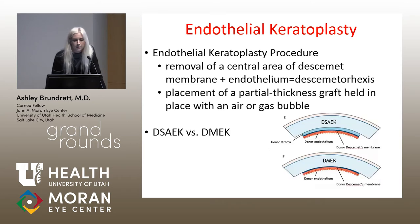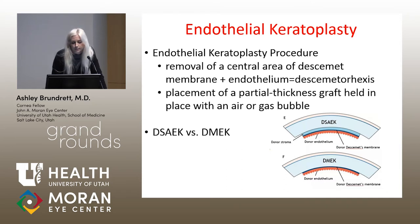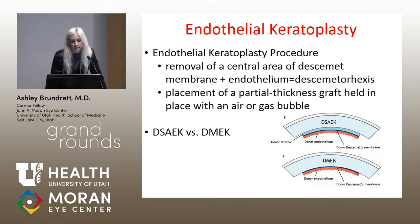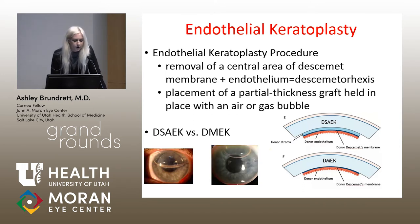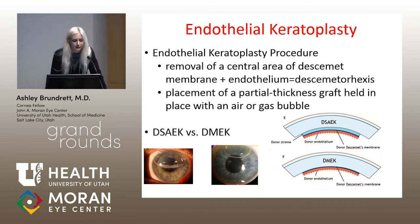DSAEK versus DMEK mainly differ in the thickness of the grafts. With DSAEK, there's donor Descemet's membrane, endothelium, and also some stroma. With DMEK, it's a much thinner graft — just the Descemet's membrane and endothelium. On the left here is DSAEK — you can see the outline of the graft. And on the right is DMEK; it's kind of hard to see, but you can maybe see a little bit of the tinted blue of the much thinner graft.